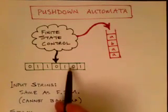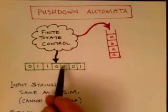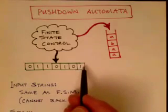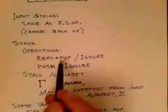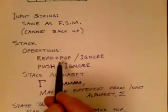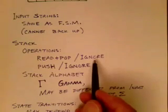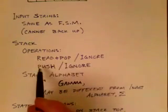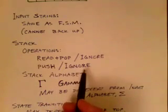The input string is the same as in the finite state machine — we read each character, advance as we read, and have to read the entire string to accept or reject, and we can never back up. The stack has your typical stack operations. We can read the top of the stack and pop the stack — those two operations are combined, so you read and pop at the same time. Or in a transition, you may choose to ignore the stack altogether. And you can also push something onto the stack, or if you don't need to, you can not push anything.